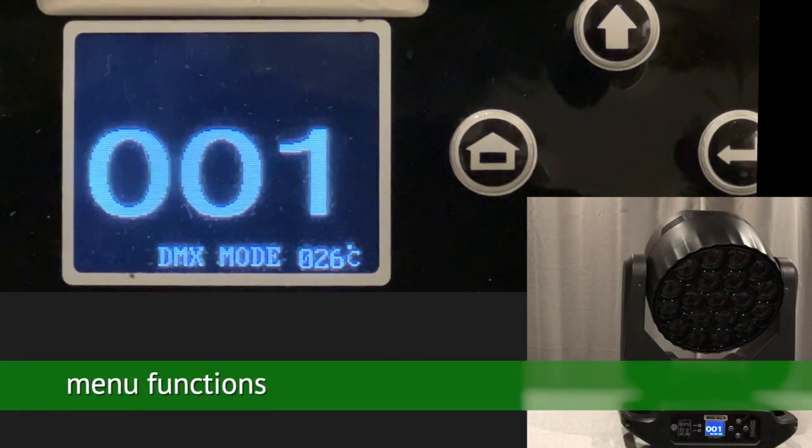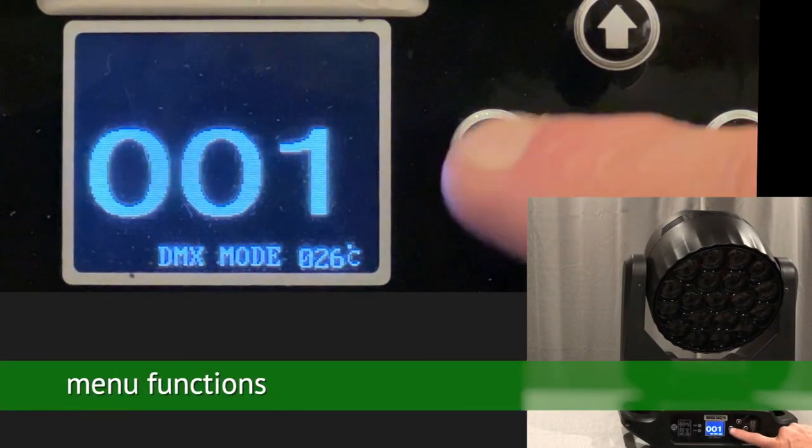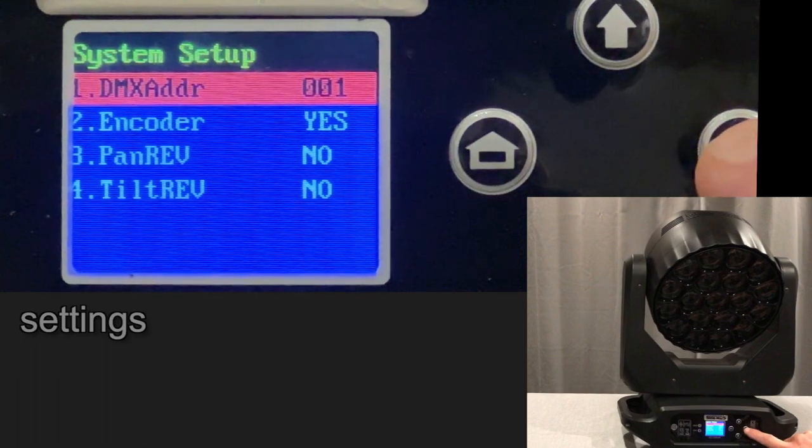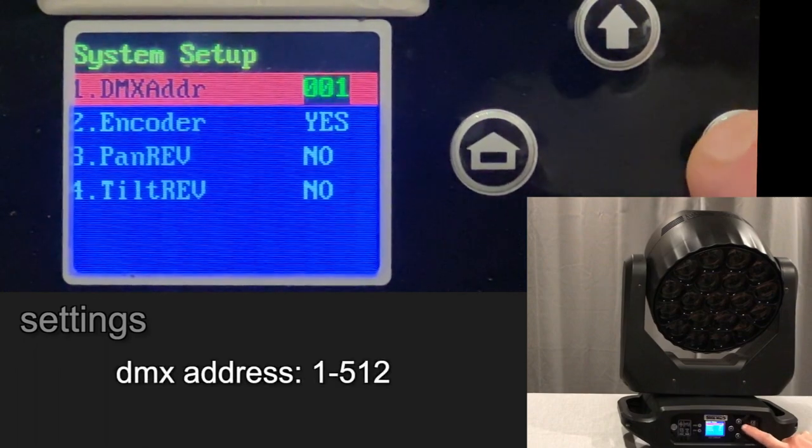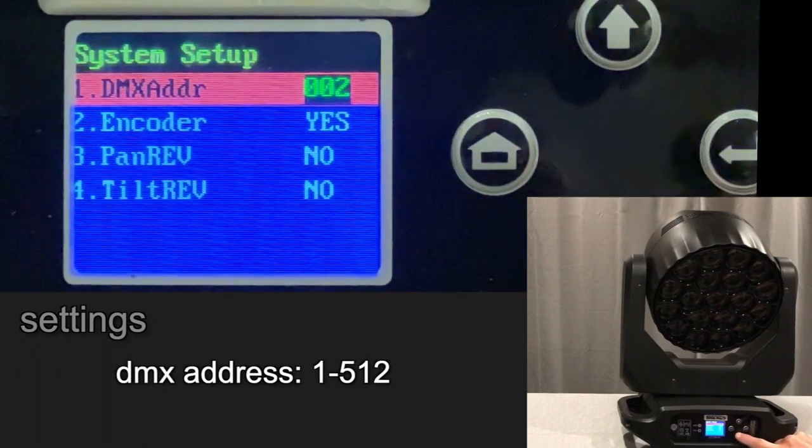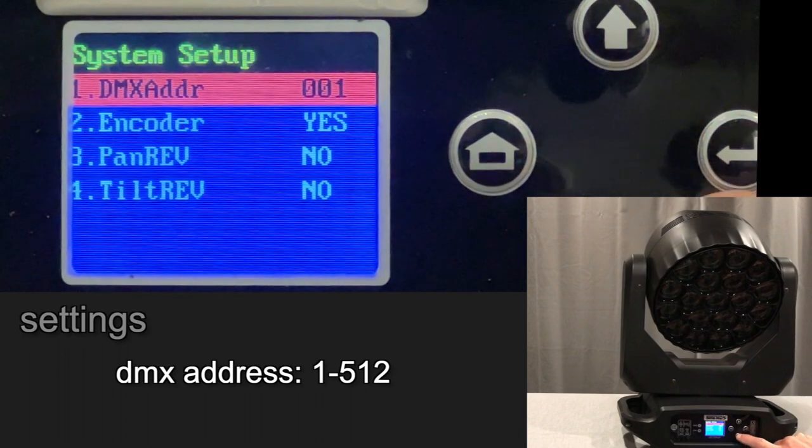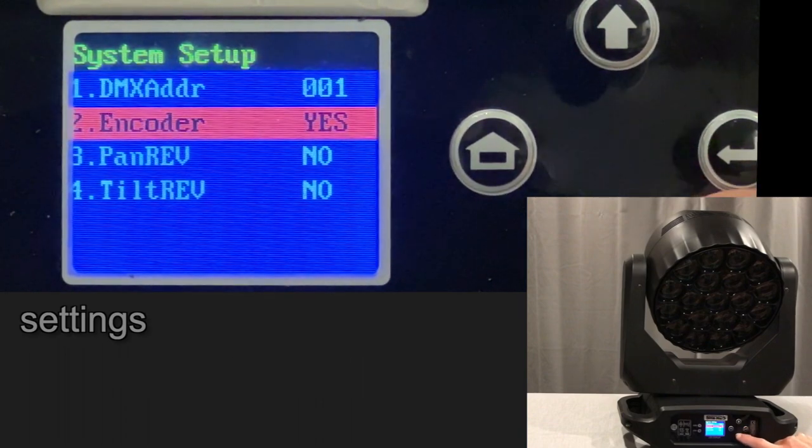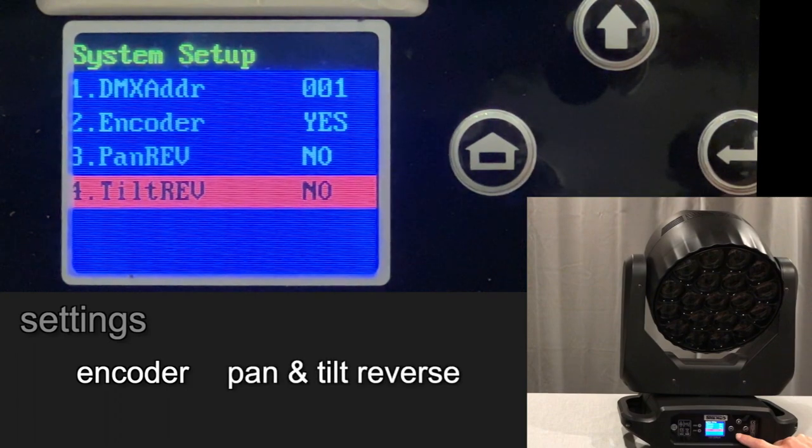The menu controls are all pretty standard on this light. Let's first look at the different settings. Here's where you set the DMX starting address. There's also a function for changing the encoder and the pan and tilt reverse.